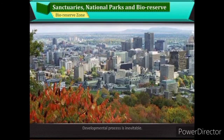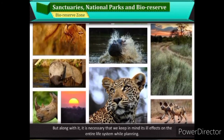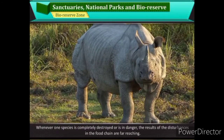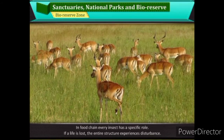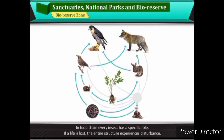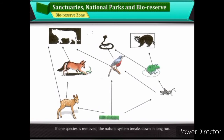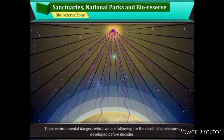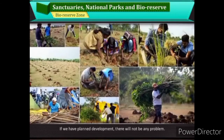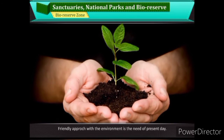Developmental process is inevitable, but it is necessary to keep in mind its ill effects on the entire life system while planning. Whenever one species is completely destroyed or in danger, the disturbances in the food chain have far-reaching results; every insect has a specific role in the food chain. If a life is lost, the entire structure experiences disturbance; if one species is removed, the natural system breaks down in the long run. These effects reach man very late, hence we are not aware of them. Those environmental dangers we are facing are the result of carelessness from decades ago. If we have planned development, there will not be any problem. Friendly approach with the environment is the need of the present day.